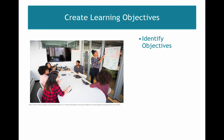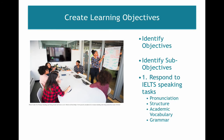You will need to identify what it is that you want your learners to be able to do by the end of the course. Keep in mind that each of the main objectives may have sub-objectives that you will need to consider. For example, I am currently creating an IELTS speaking course for speakers of English as a second language. One of my first major objectives is that students will be able to respond to IELTS speaking tasks.